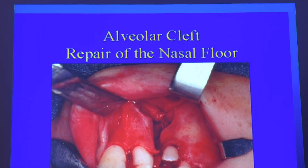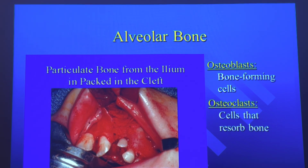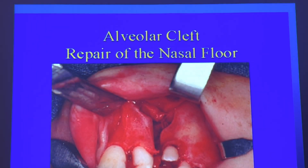Here you have repair of the nasal floor. Everything has been cleaned out, and they're going to pack it with bone-forming cells — osteoblasts — to repair that. You can see retractors in the image — those silver things are called Minnesota retractors. You'll use those in general dentistry, oral surgery, and lots of different procedures.